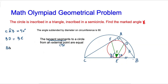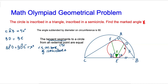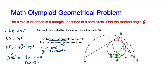Since triangle BDE is isosceles, the base angles are equal: angle BED equals angle BDE equals x degrees. Therefore angle DBE equals 180 minus x minus x, because the sum of interior angles of a triangle is 180. So angle DBE equals 180 minus 2x.